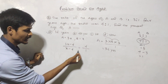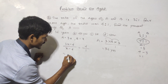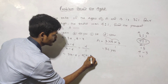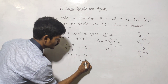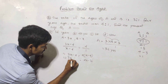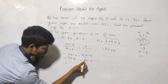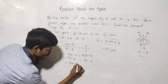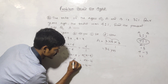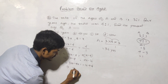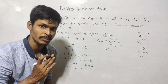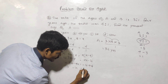The ratio 4 years ago is 4 to 1. So 3x minus 4 equals 4 into (x minus 4). Expanding: 4x minus 16 equals 3x minus 4. Solving: x equals 12, so A equals 3x minus 4.